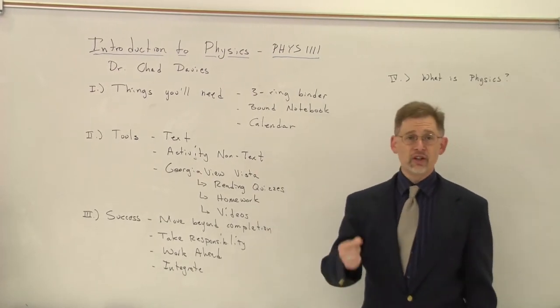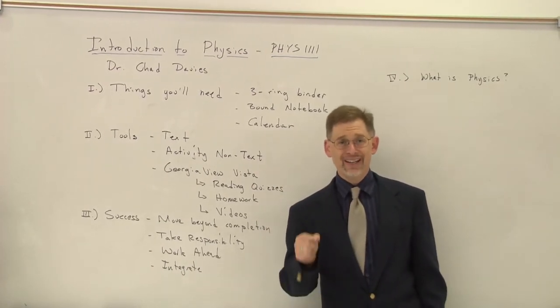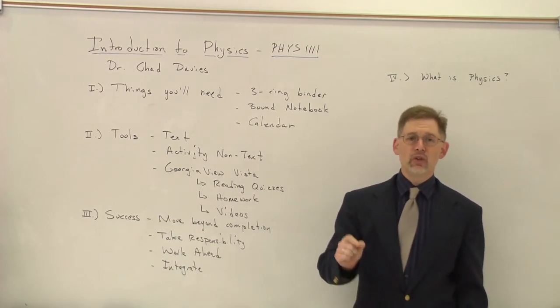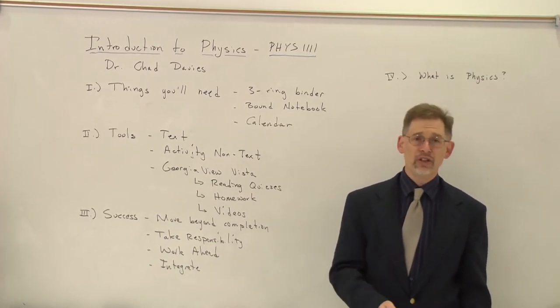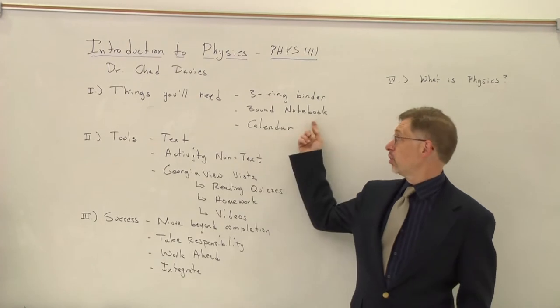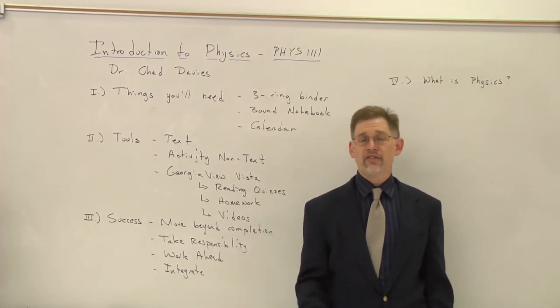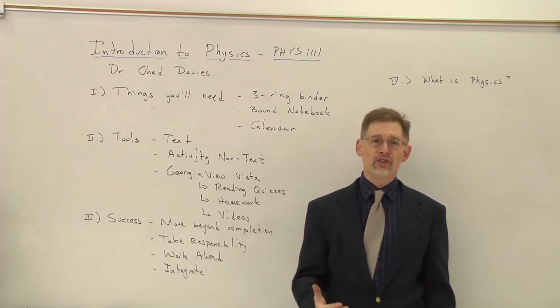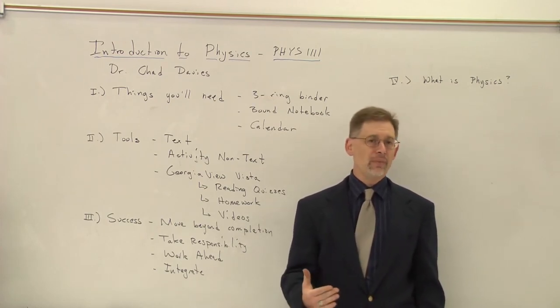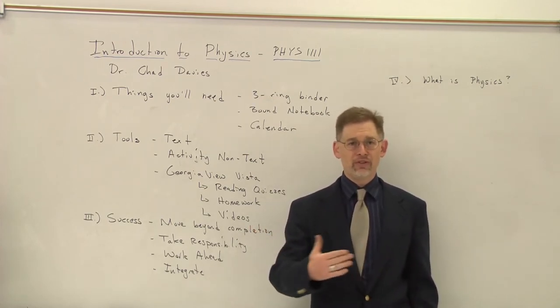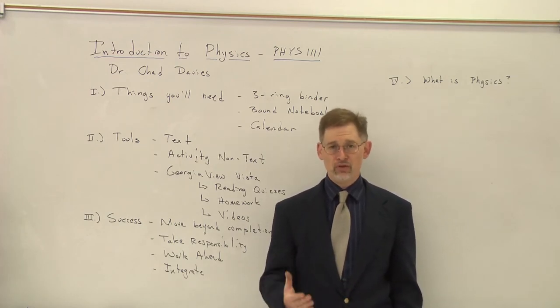Second thing you're going to need is you're going to need a single bound composition notebook, and it needs to be a bound composition notebook. No spiral notebooks, no loose-leaf notebook paper. This is where you can do all of your homework for the class that's going to be turned in. I'm going to grade and give back to you, and I insist that you use this sort of methodology as a way to make sure we cut back on those individual pieces of paper that can get lost or damaged or whatnot.